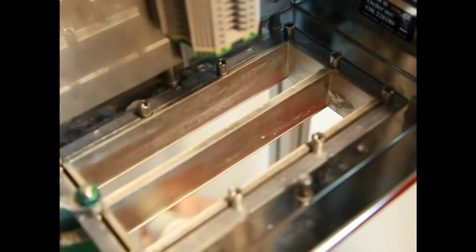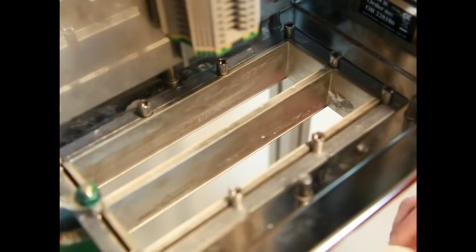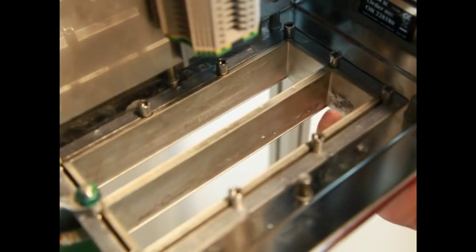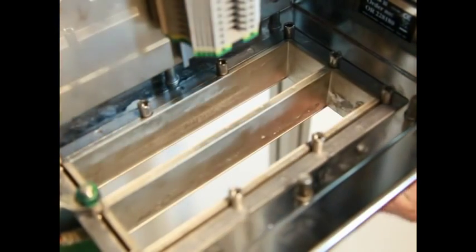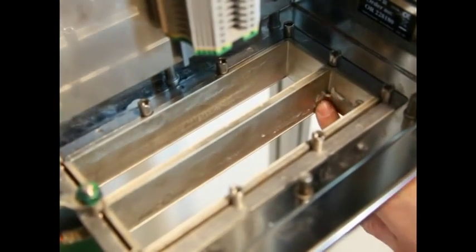Lubricate the frame areas that will be in contact with the rubber of the modules, especially in the corners. Avoid excess lubricant on areas in contact with the braid.